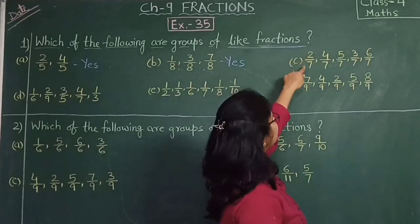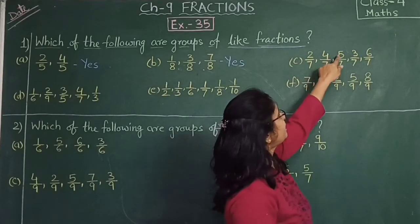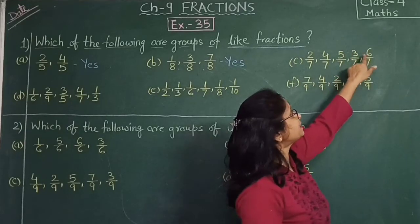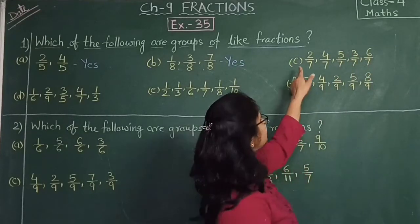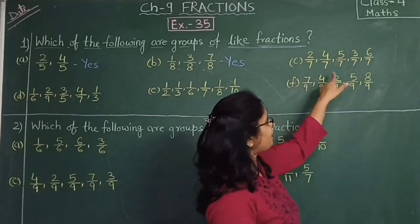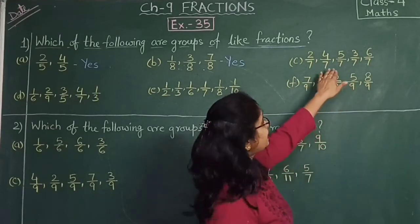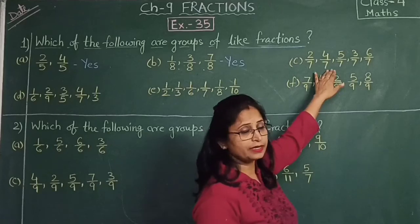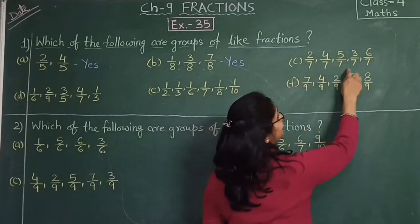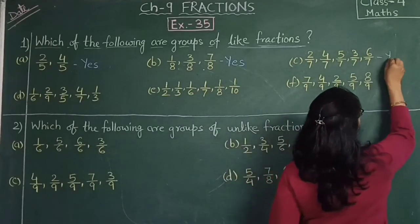Then C: 2 by 7, 4 by 7, 5 by 7, 3 by 7 and 6 by 7. Is the denominator the same? Yes. Why is it a like fraction? Because the denominator is the same. So you will write yes.